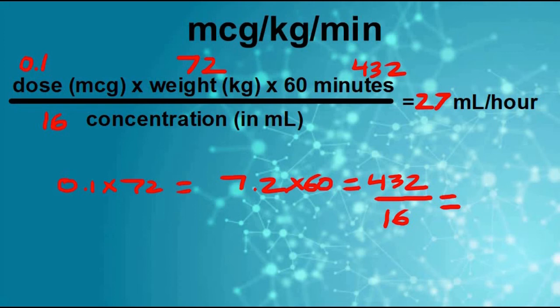For example, let's say the hospital hands you a bag of their levophed and they diluted 8 milligrams in 250. So the concentration is no longer 16. Now it's 32. Well, we already did our math. All we have to do is change this one number, 32, and divide 432 by 32 in order to get the new milliliters per hour. You decide you want to titrate. Instead of going 0.1, you can just change my dose. Now I'm going to go to 0.2 and increase my levophed and recalculate again. So as long as you have that formula, the rest really is easy peasy.